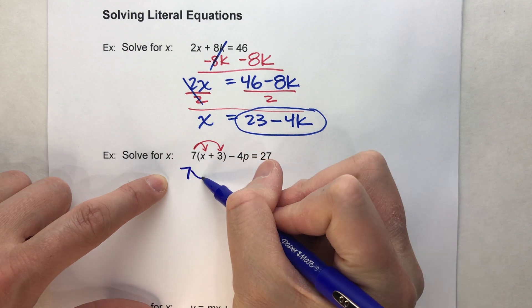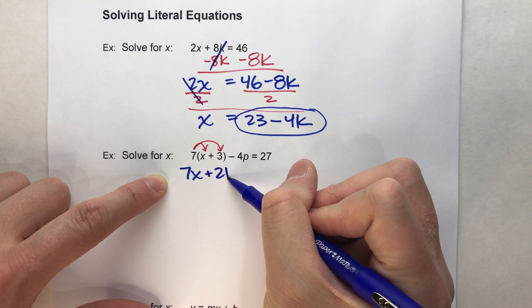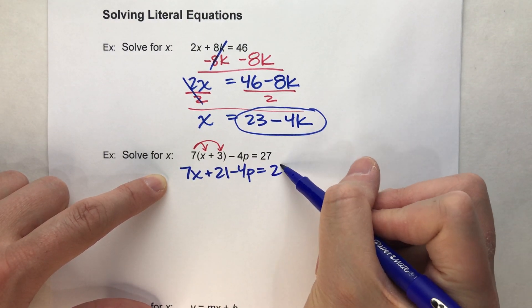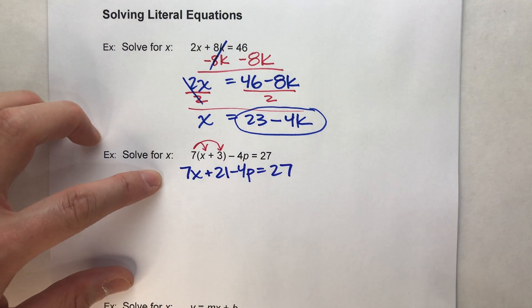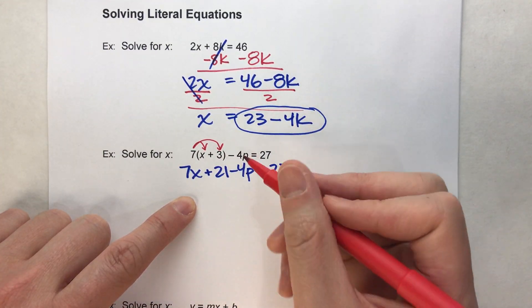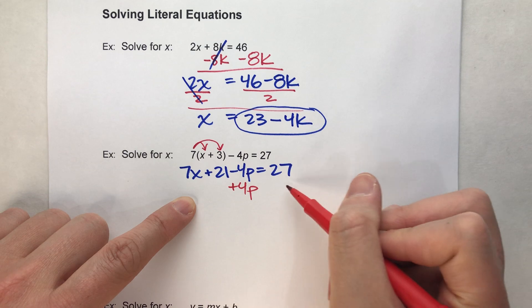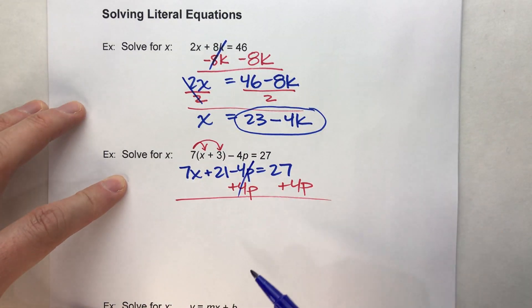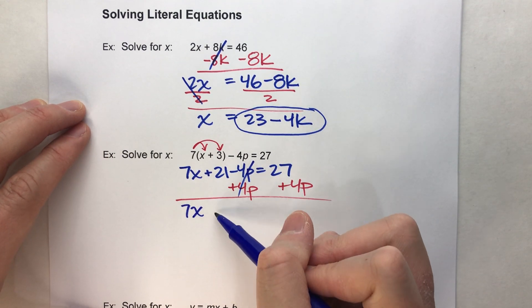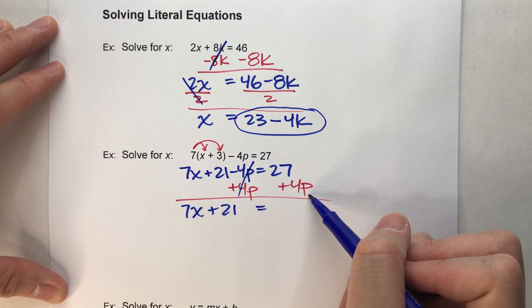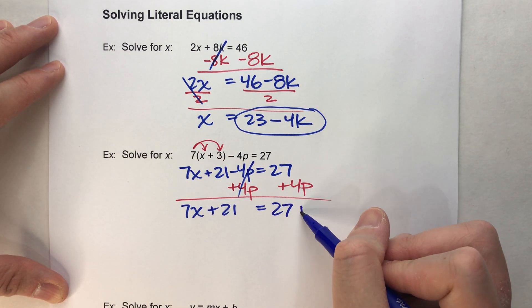7 times x is 7x, plus 7 times 3 is 21. Drop down my minus 4p, drop down my equals 27. That makes things a little easier. Now I want to get x by itself, so we need to undo these things. I'm going to start by adding 4p to both sides. Those undo each other, 7x plus 21 drops down, the equals drops down, and I can't combine p's with regular numbers, so I'll keep them separate.